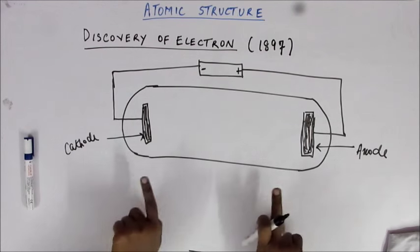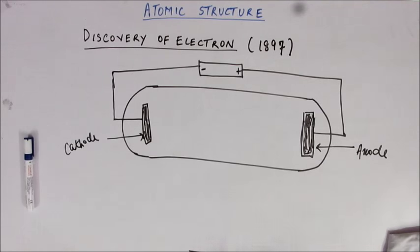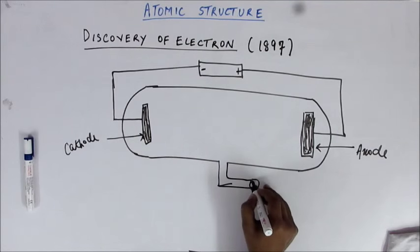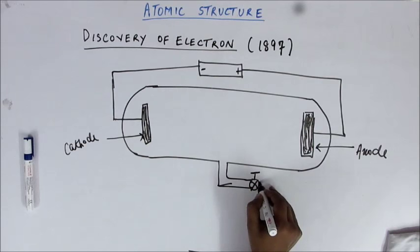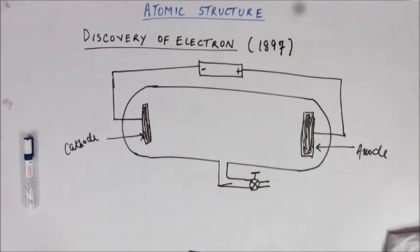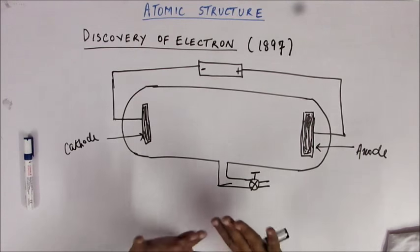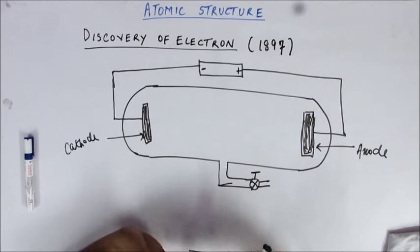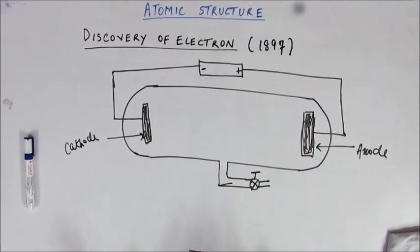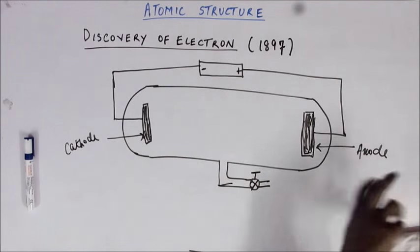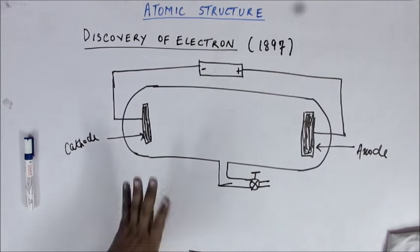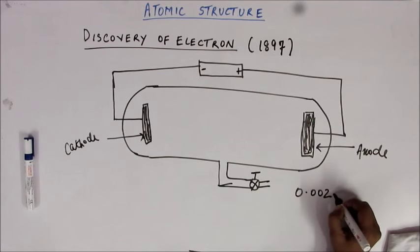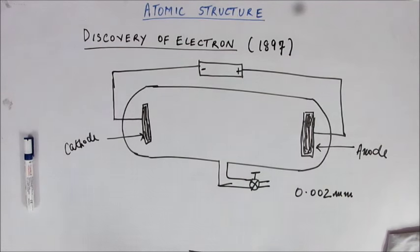So this is the basic setup: a glass chamber, two electrodes, and a battery — one becomes cathode and one becomes anode. A pump is also attached to this chamber to pump out any gas present inside. The chamber is brought to near vacuum — you cannot make it perfect vacuum, but the pressure inside drops down to 0.02 mm of mercury, a very small value of pressure.